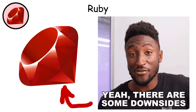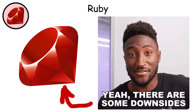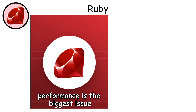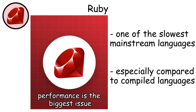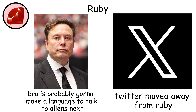But Ruby has serious downsides — performance is the biggest issue. Ruby is one of the slowest mainstream programming languages, especially compared to compiled languages. This is why Twitter famously moved away from Ruby, as it couldn't handle their scaling needs.